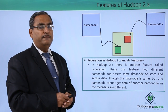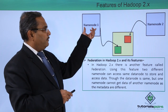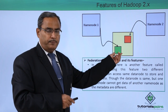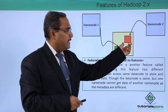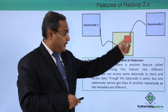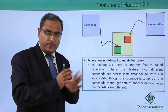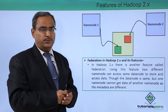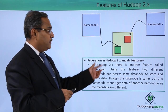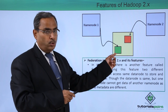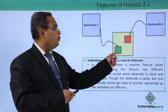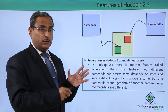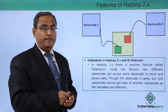The concept of federation means that name node 1 is accessing particular blocks and name node 2 is accessing other data blocks — and both are on the same data node. However, name node 2 cannot access the blocks meant for name node 1, because they have their separate metadata.